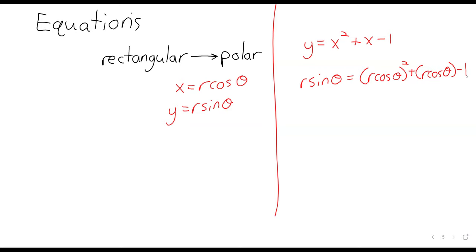The take-home message from this example is that it's often a bad idea to convert from rectangular to polar coordinates. This first equation is much nicer than the second equation, but at least theoretically it was not hard to do. We just plugged in r cosine of theta whenever x showed up, and r sine of theta whenever y showed up.